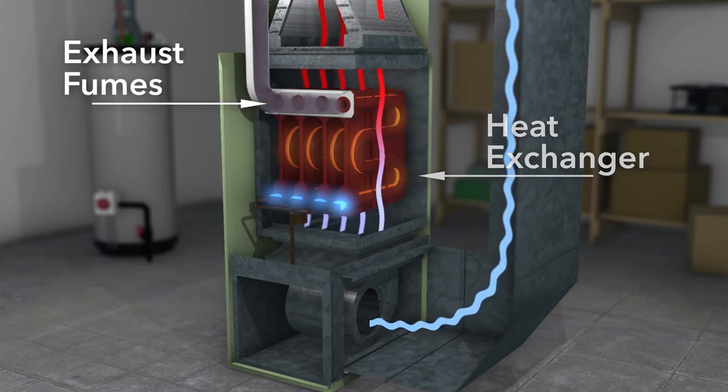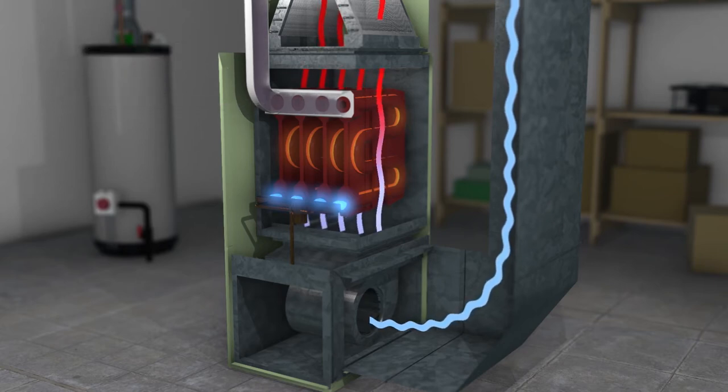Exhaust fumes that include deadly carbon monoxide gas are produced as the fuel is burned. A properly functioning system is designed to keep the fumes inside the heat exchanger and then send them safely out of the house.